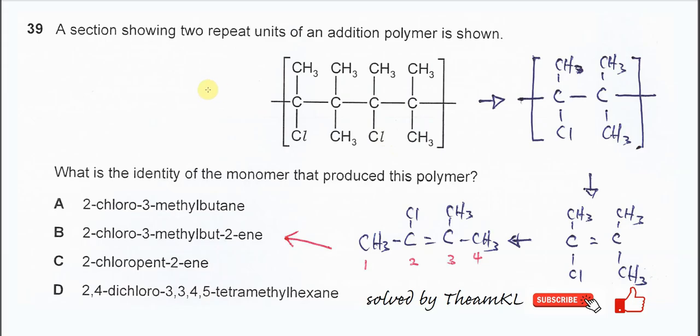Question 39: A section showing two repeat units of an addition polymer is shown. This is the polymer chain with two repeat units - this is one repeat unit, this is another repeat unit. It's quite obvious from these two repeat units.